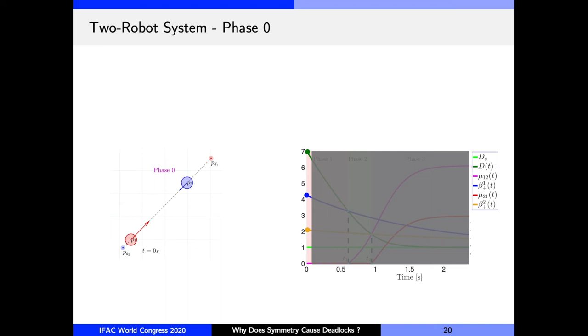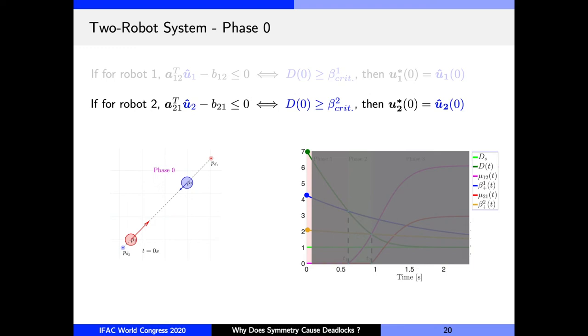So let's look at phase zero in more detail. At t equals zero, if the initial distance between the robots, that is d(0), which is shown in the dark green dot in this graph, is greater than the critical distance of robot one, shown in blue, then u_1^star(0) will simply be u_1^cap(0). Similarly for robot two, if d(0) is greater than β_2, that is shown in mustard, then u_2^star will be u_2^cap. So when I said earlier that robots are not worried, I meant that they can use their prescribed nominal control, pretending as though there wasn't another robot around.